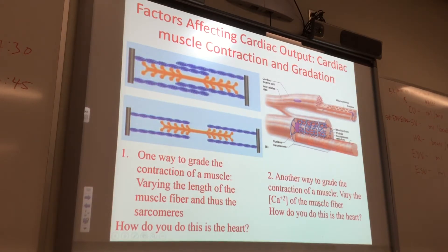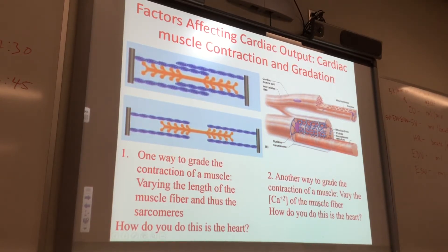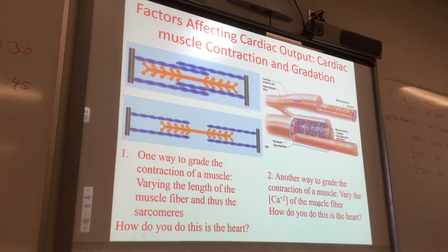Another way to grade the force of contraction of a muscle is to vary the calcium concentration. You can increase the amount of calcium in the heart through drugs or the sympathetic nervous system. So there are two ways to grade force of contraction: vary the length of the cardiac muscle cells by changing ventricular volume, or increase calcium. The sympathetic nervous system releases norepinephrine and epinephrine.